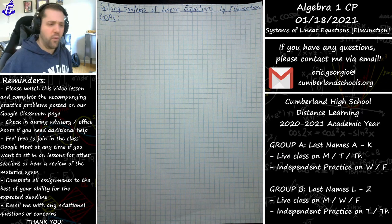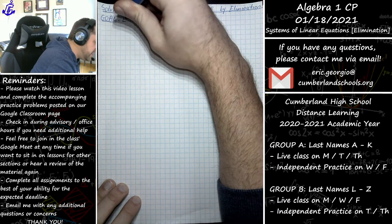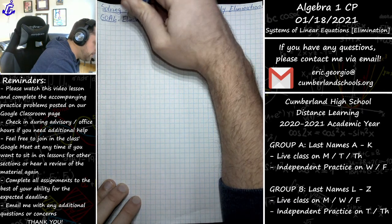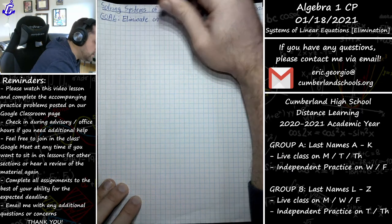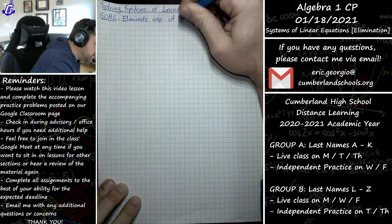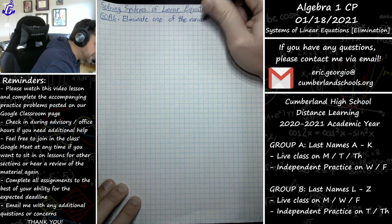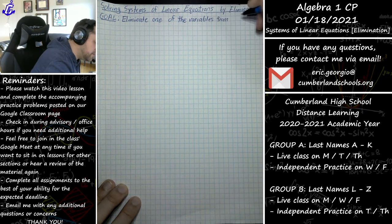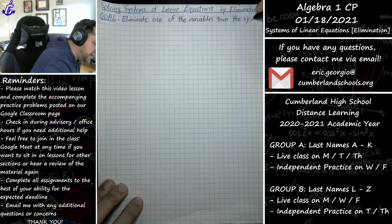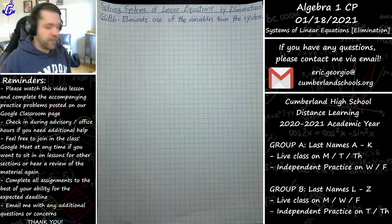The goal of elimination is we want to eliminate one of the variables — either x or y — from the system. We want to eliminate whichever one is actually more convenient depending on the problem.